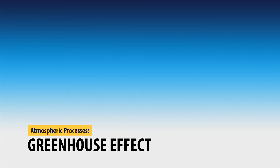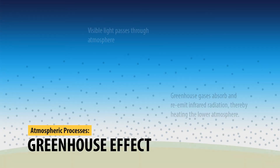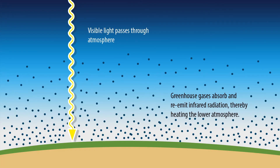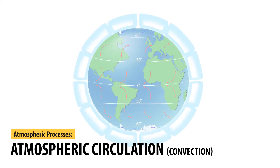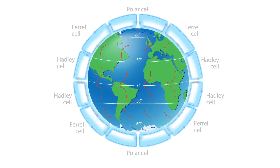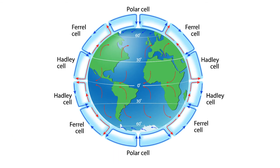Let's talk about the greenhouse effect. In this process, infrared energy is re-reflected back to the ground by carbon dioxide. Next we look at atmospheric circulation and convection. In this process, convection cells move gas from the equator to the pole and back.